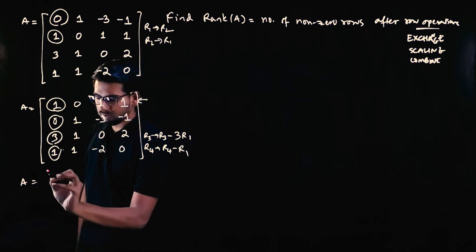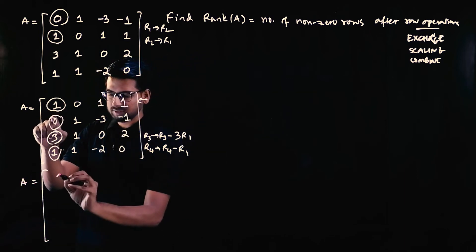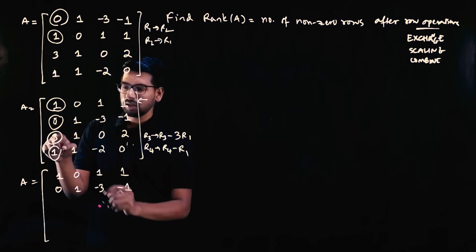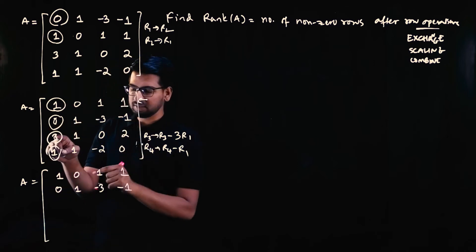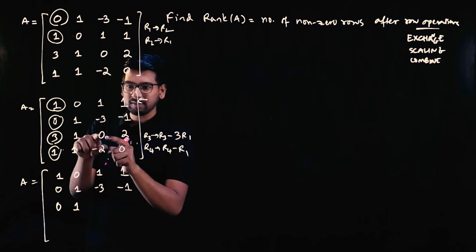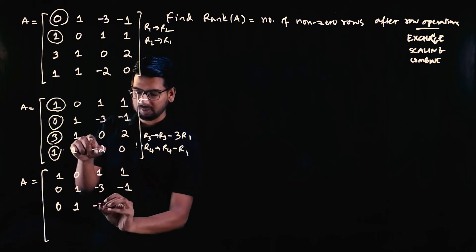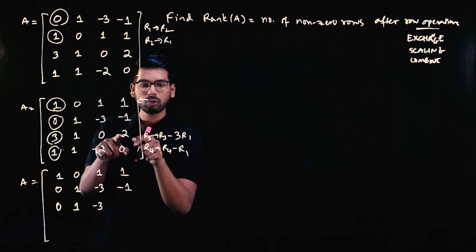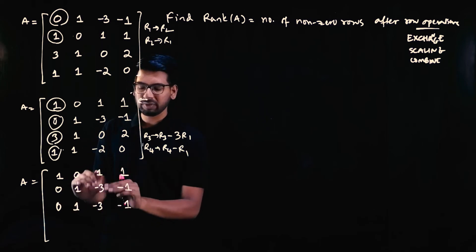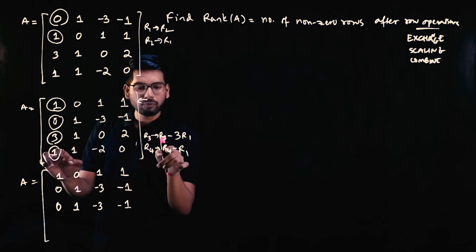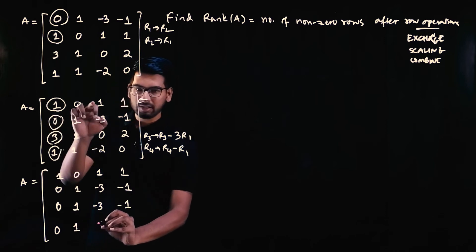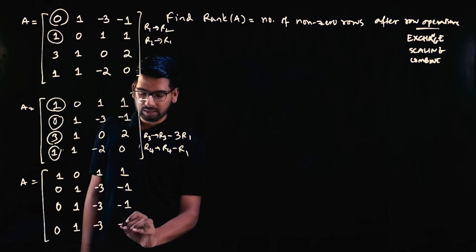After these operations, row one stays as [1, 0, 1, 1], row two stays as [0, 1, −3, −1]. For the new row three: 3 − 3×1 = 0, 1 − 3×0 = 1, 0 − 3×1 = −3, 2 − 3×1 = −1. For row four (R4 − R1): 1−1 = 0, 1−0 = 1, minus 2 − 1 = −3 (approx), 0 − 1 = −1.